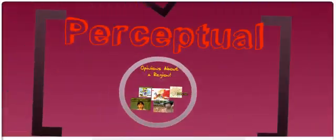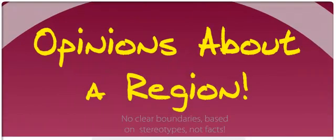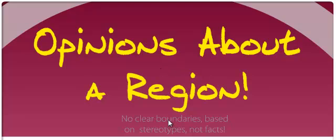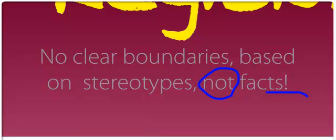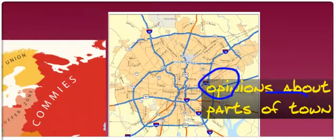Now, let's take a look at perceptual regions — these are the real funky ones. Perceptual regions are opinions about regions; a whole bunch of people get together and form an opinion. There are no clear boundaries, and it's all based on stereotypes, not based on fact at all. You get lots of attitudes about a place.